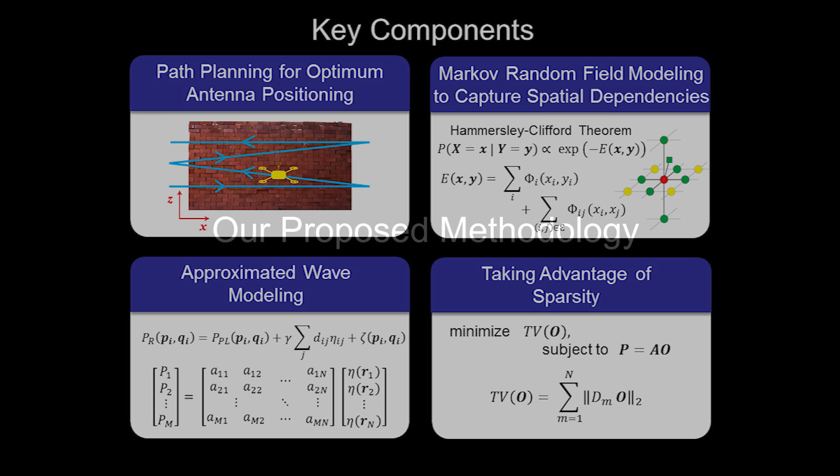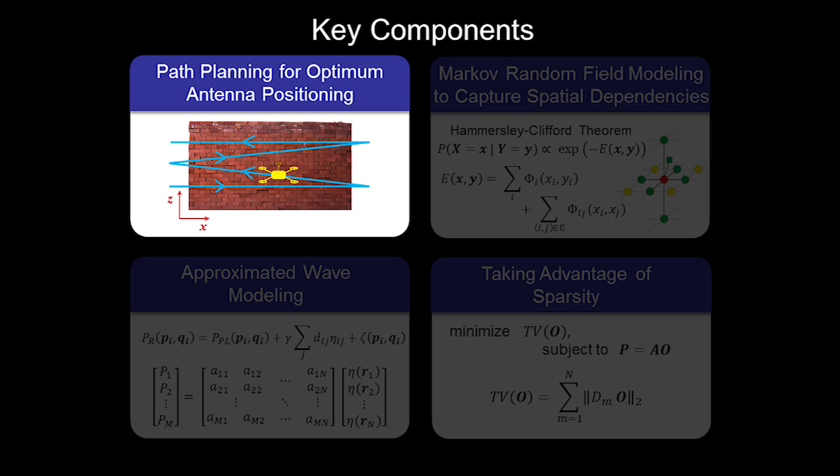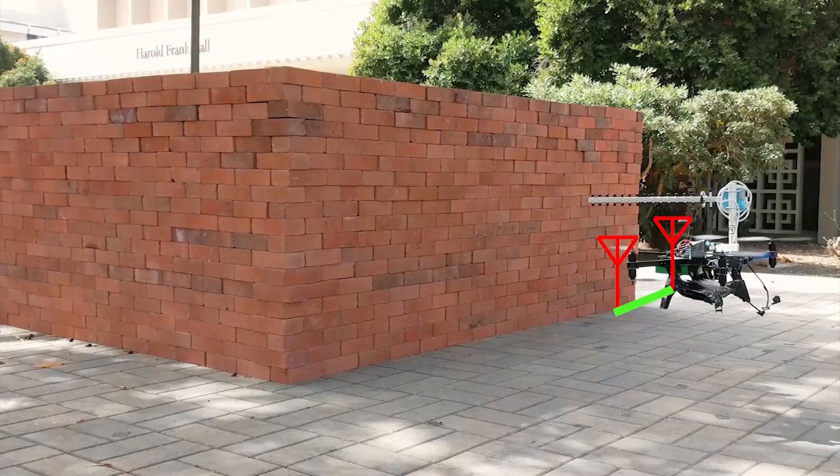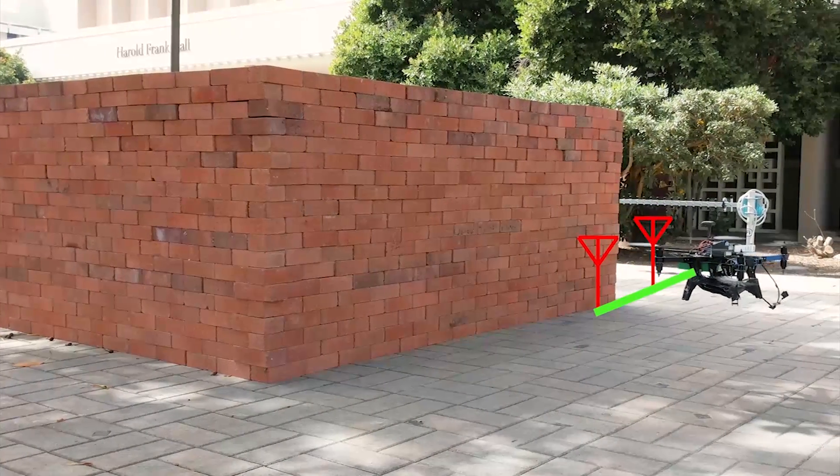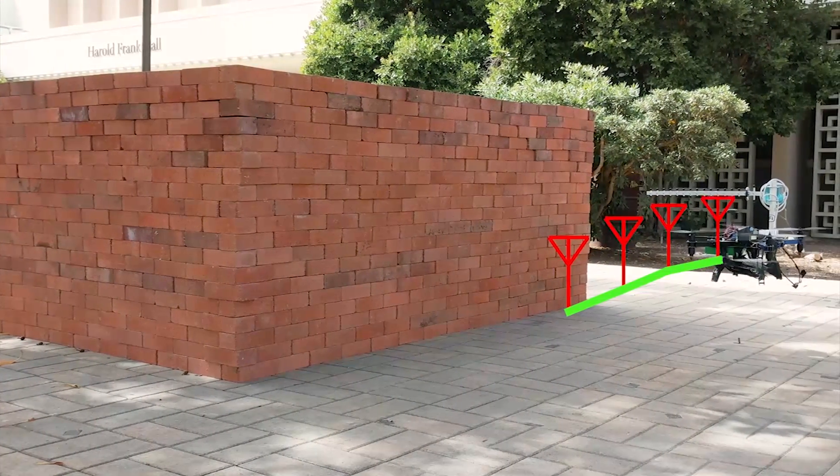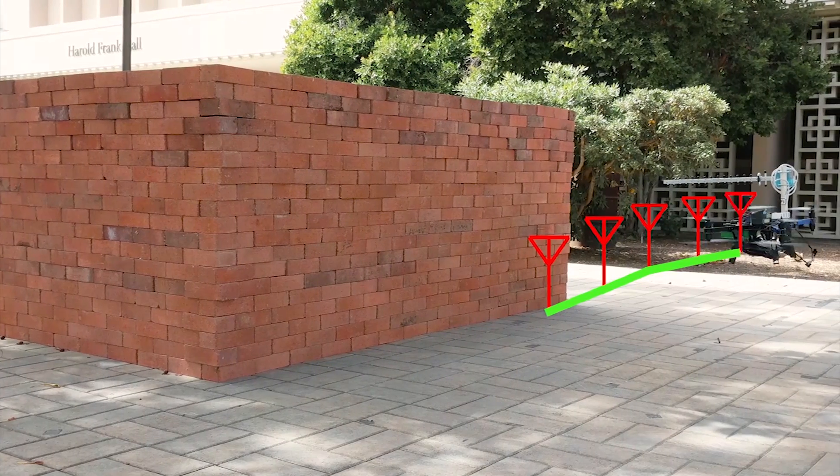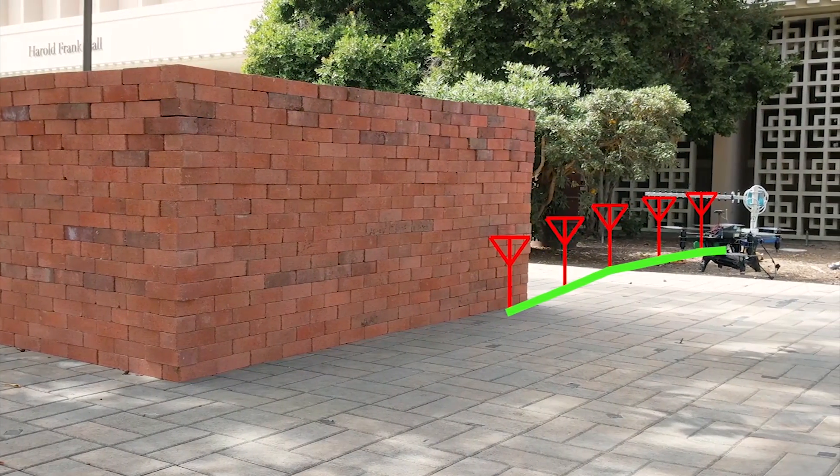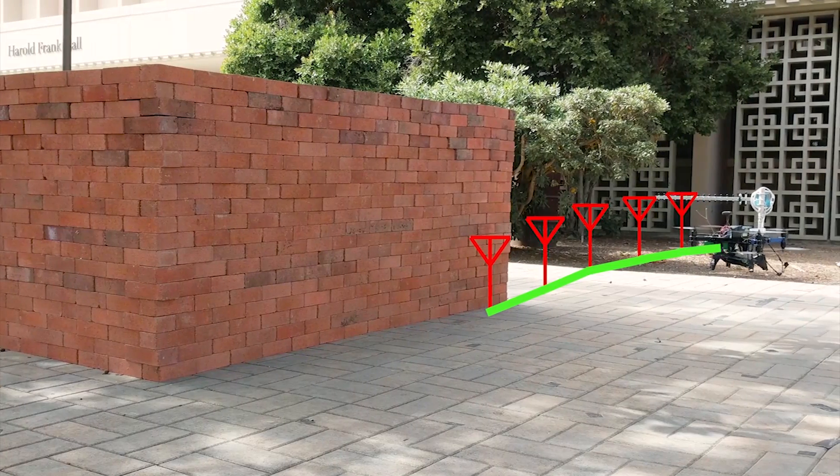Let's now see how we have enabled this. There are four key parts to our proposed methodology. First, consider path planning of the robots. Using unmanned vehicles allows us to have several autonomous transmit receive antenna positions, which is key to solving this challenging problem with only Wi-Fi RSSI. But what paths should the robots take?